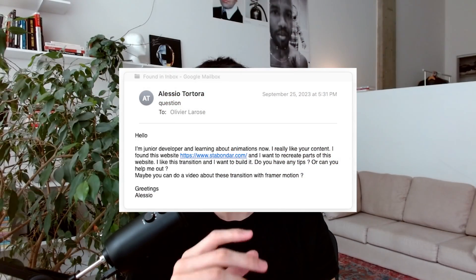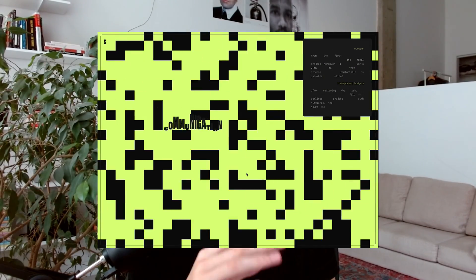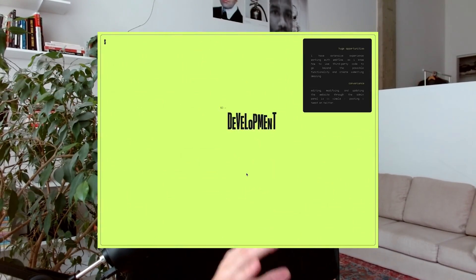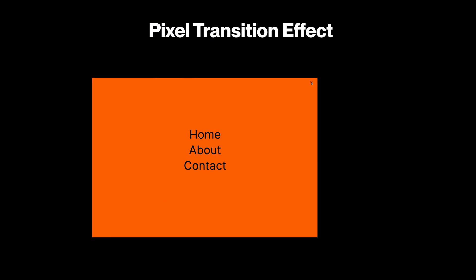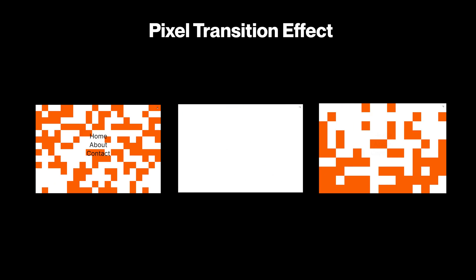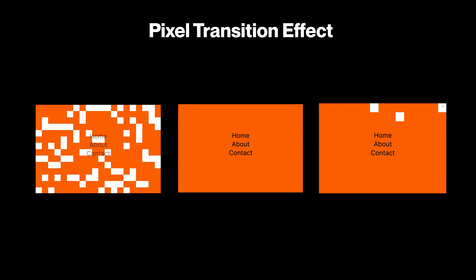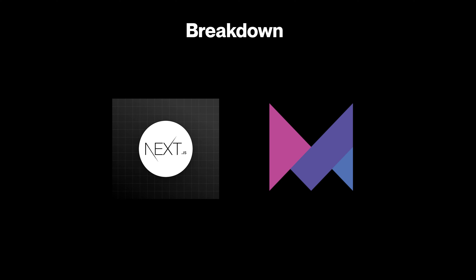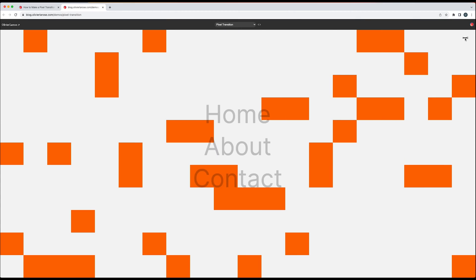What is up guys, welcome back. I received an email asking to recreate this pixel effect transition that I've seen on a lot of award-winning websites. So today I'll take a look at three variants: one animated from the center, one coming from the left, and one coming from the bottom. I'll use Next.js and Framer Motion to recreate this. The source code and live demo are both available in the description below.